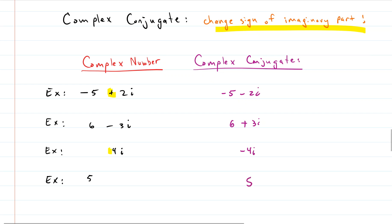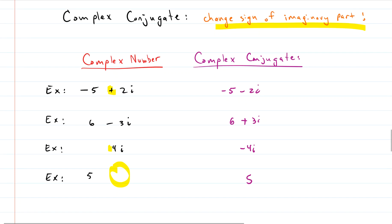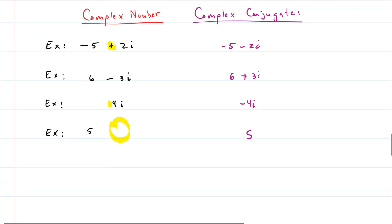So what happened? Why didn't I change any sign there? Well, there is no imaginary part here. So I can't change anything. So if you just have a complex number that only has the real part, then it is its own complex conjugate. Kind of cool, huh? So finding complex conjugates is pretty straightforward.